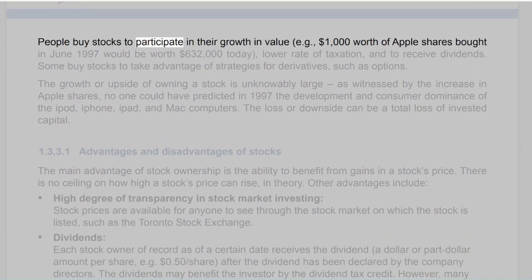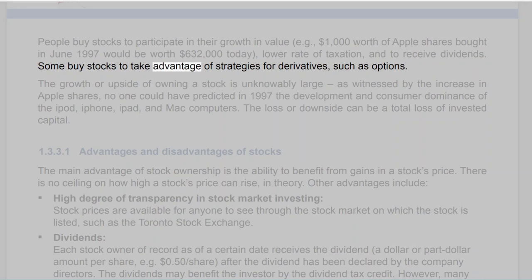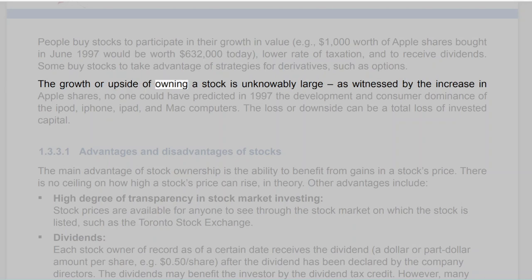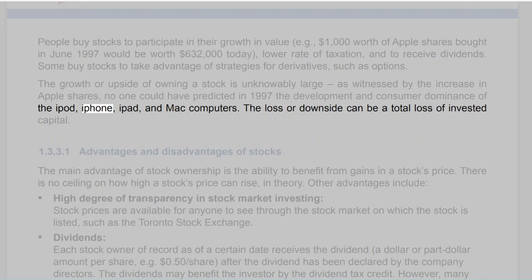People buy stocks to participate in their growth in value — for example, $1,000 worth of Apple shares bought in June 1997 would be worth $632,000 today — as well as for a lower rate of taxation, to receive dividends, and to take advantage of strategies for derivatives such as options. The growth or upside of owning a stock is unknowably large, as witnessed by the increase in Apple shares — no one could have predicted in 1997 the development of the iPod, iPhone, iPad, and Mac computers. The loss or downside can be a total loss of invested capital.